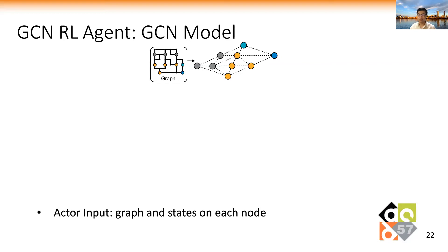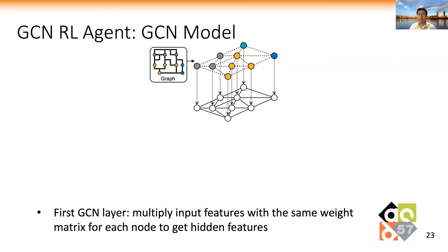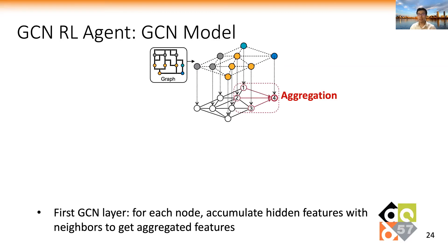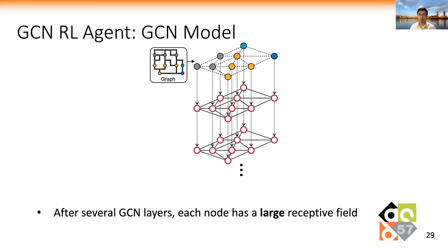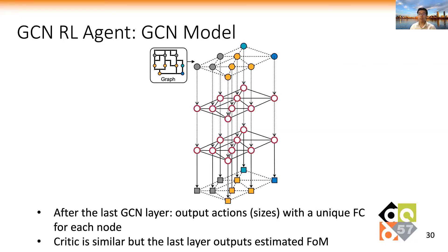The actor takes a graph and state vectors on each node as inputs. Then, in the first GCN layer, we multiply the input features with the same weight matrix for each node and get hidden features. We then accumulate the hidden features of a node with its neighbors to get its aggregated features. This process is performed simultaneously on all nodes, so we get all aggregated features. Multiple GCN layers are stacked together, each having one fully-connected layer and one aggregation operation. After several GCN layers, each node can have a large receptive field. After the last GCN layer, we apply a unique FC layer for each node and output sizes for the corresponding circuit components.